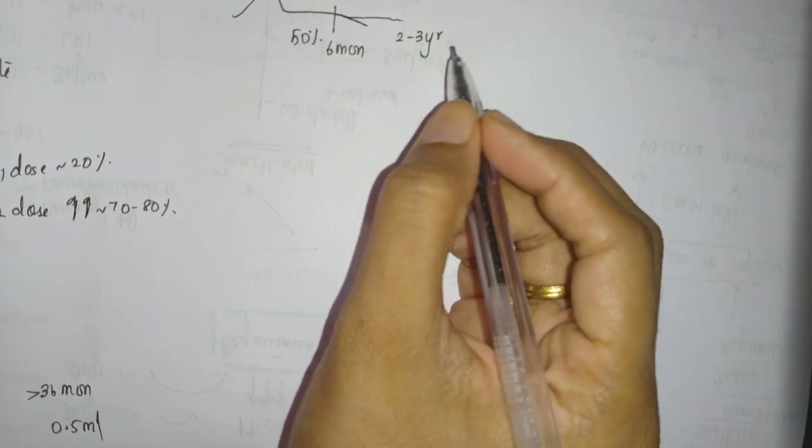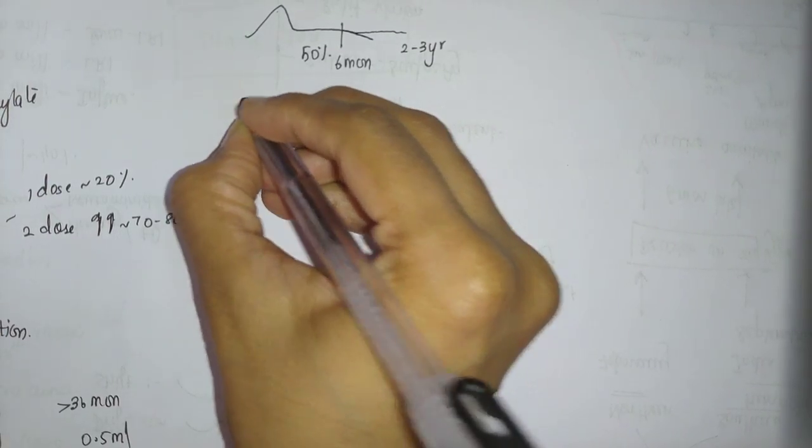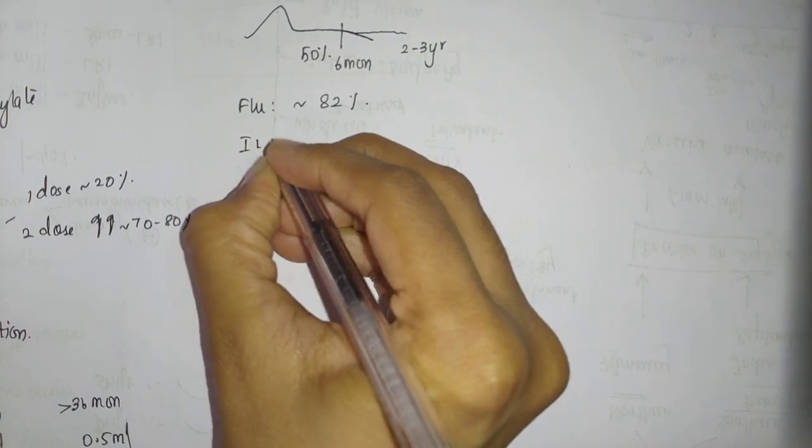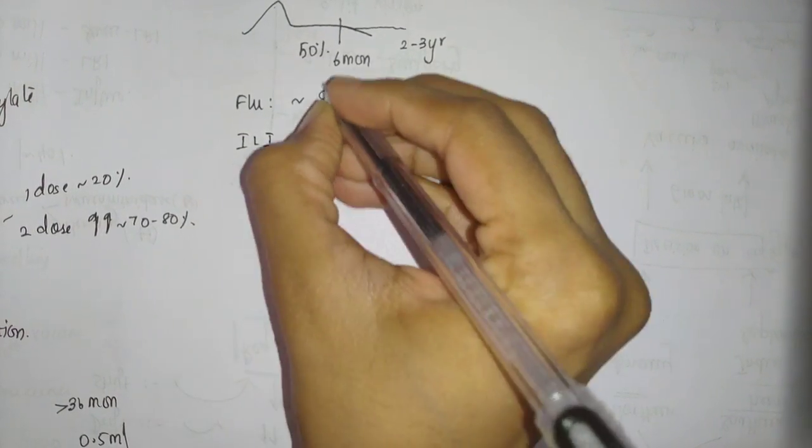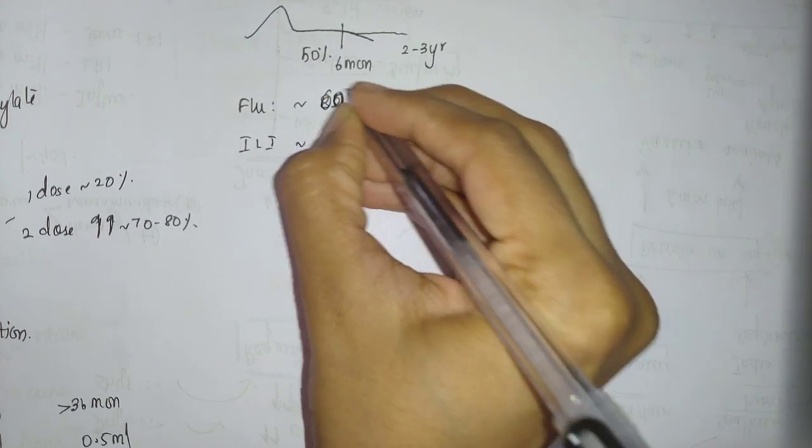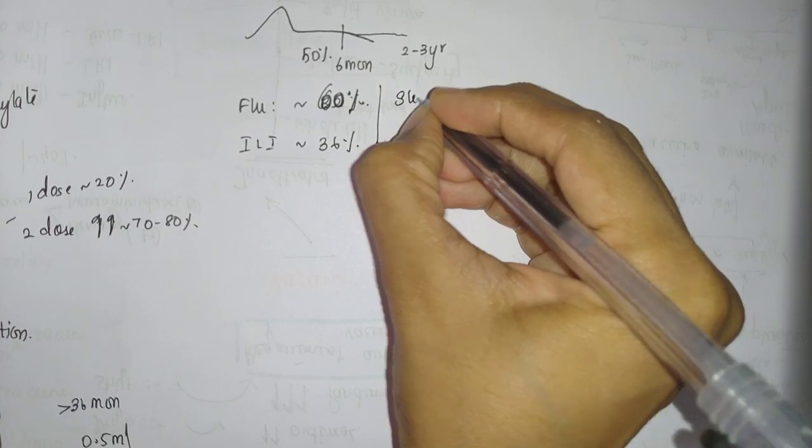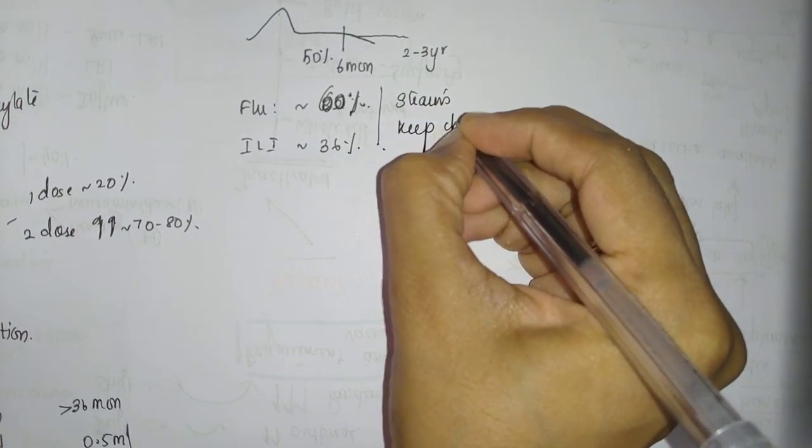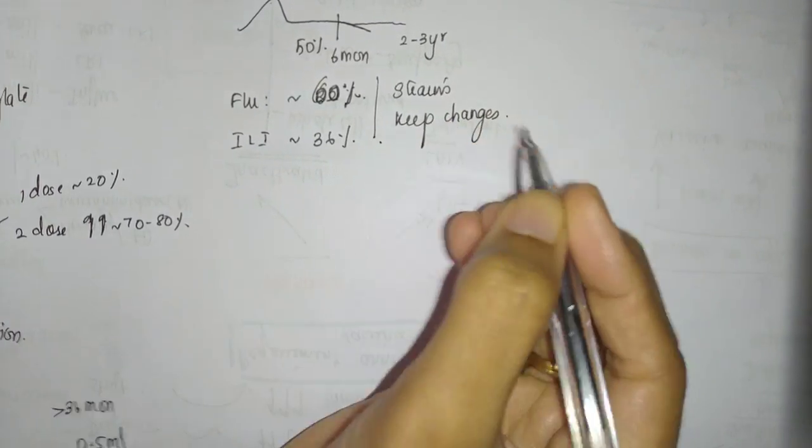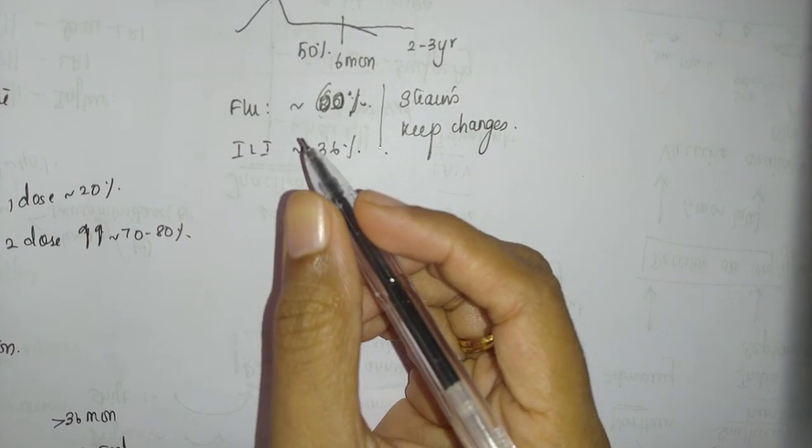What is the amount of protection? For flu per se, there can be up to 82% protection, but for any influenza-like illness it will be just 59-60%. Influenza-like illness will be just 36%. This reduced amount is because the strains keep changing. Even if WHO has approved something, the vaccine comes only after 6 months, and you vaccinate after 2 to 3 months, so by the time the strains might have changed. Hence the reduced amount of protection, but some amount of protection is better than no protection.